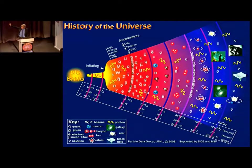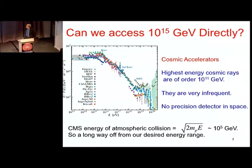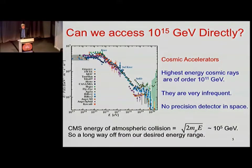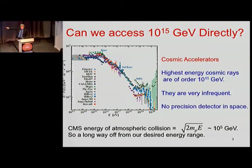We'd like to extrapolate from what we know back towards the Big Bang. The energies are actually out there — very energetic particles come from outer space. Cosmic rays are hitting the atmosphere all the time at very high energies. There's a graph showing the number of particles at a particular energy against the energy they have — it tails off very rapidly at 10 to the 20 electron volts, a very large number, but there aren't very many of them.